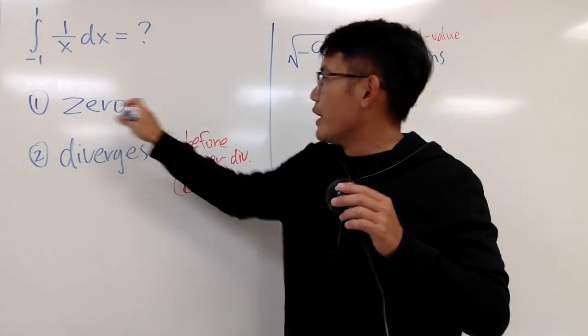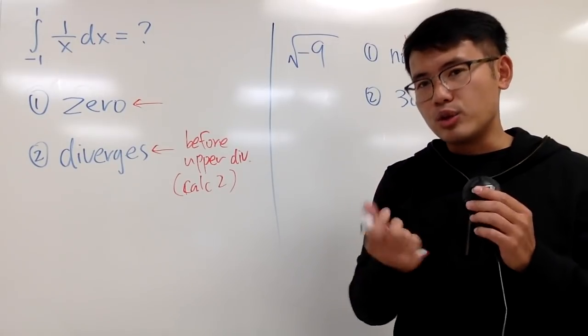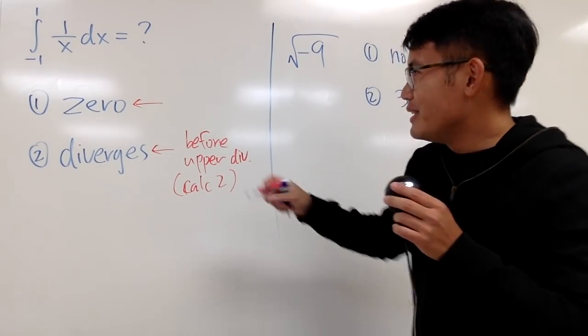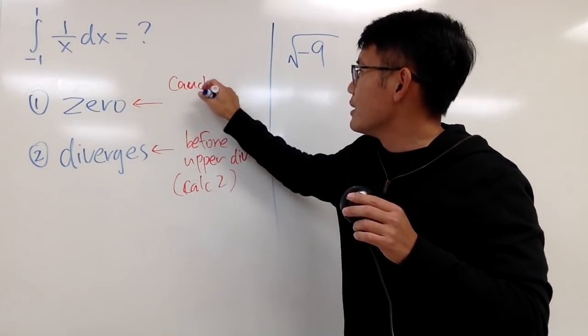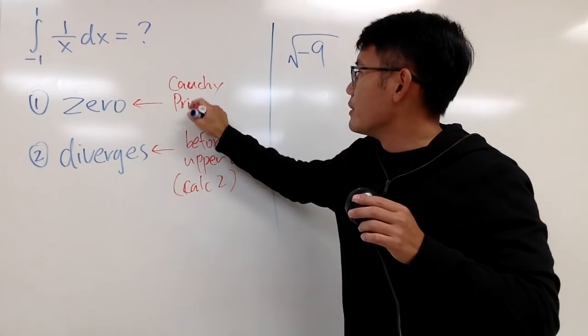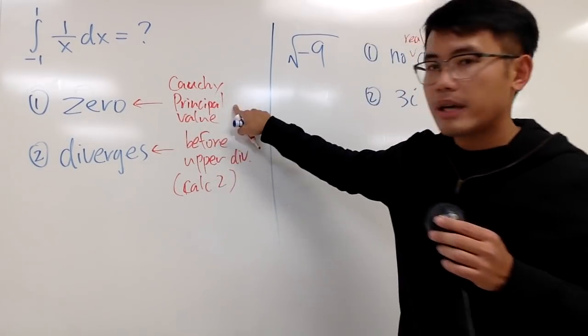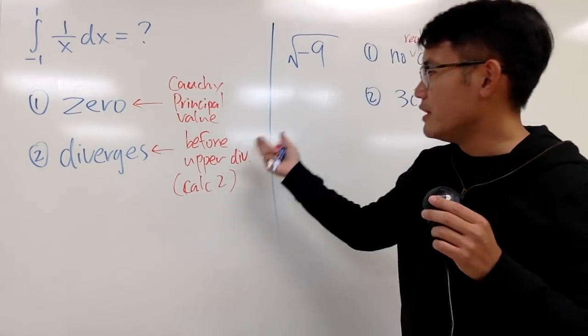Well, right here, people think that this is 0 because of the area that I showed you guys in the previous video. But that's actually what we call the Cauchy principal value. And this is usually learned in analysis, which is the upper division math class.